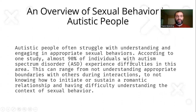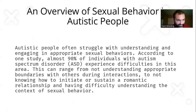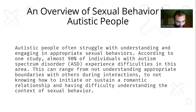An overview of sexual behavior of autistic people. Autistic people often struggle with understanding and engaging in appropriate sexual behaviors. According to one study, almost 90% of individuals with autism spectrum disorder experience difficulties in this area. This can range from not understanding appropriate boundaries with others during interactions, to not knowing how to initiate or sustain a romantic relationship, and having difficulty understanding the context of sexual behavior.